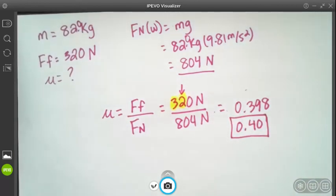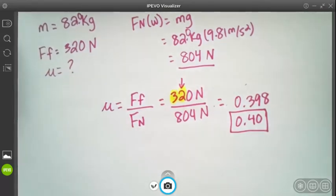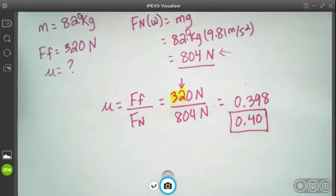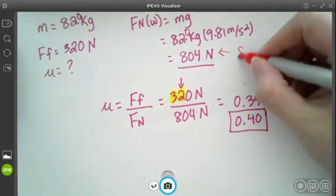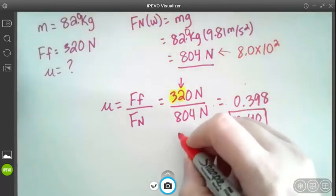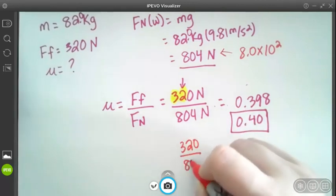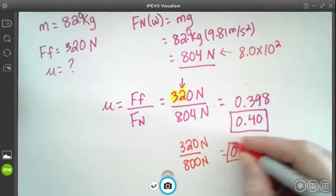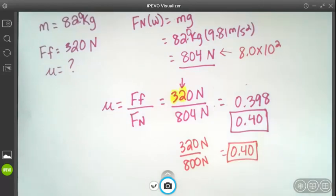Now just to show you the whole purpose of sig figs when you're doing measured quantities, if I was going to actually keep this at two sig figs so that would be 8.0 times 10 to the second which is just 800. So if I actually do 320 divided by 800 newtons, you will see that my answer is 0.40. So that is why we use sig figs, because that small amount is not significant in changing our actual answer. So that's one of the whole purposes of using that.